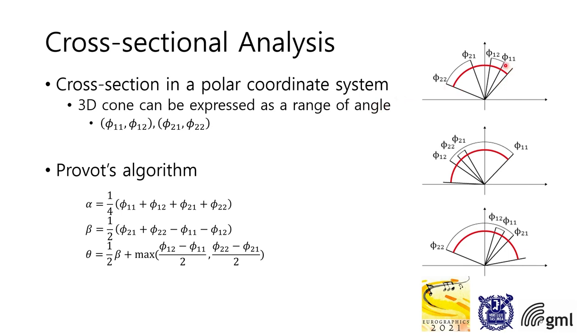The result of projecting a 3D normal cone to the cross-section can be expressed as a range of angles. The angle from φ₁₁ to φ₁₂ is one cone, and from φ₂₁ to φ₂₂ is the other cone. And this equation is the 2D version of Provot's merging algorithm.